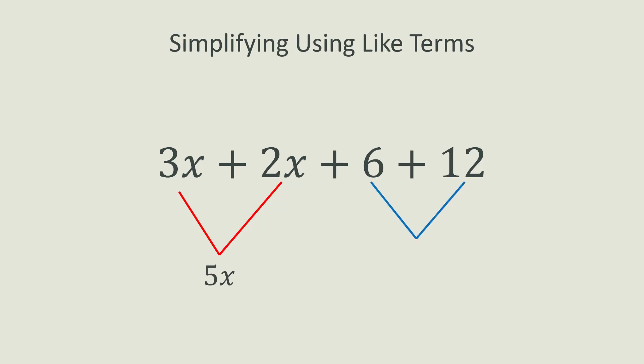6 and 12 are like terms because they are both multiplied by 1. 6 plus 12 is 18. Now, the only operation that we have left is the addition sign. We can bring that to the bottom and we get 5x plus 18. Since we can't simplify it further, that's our final simplified answer.